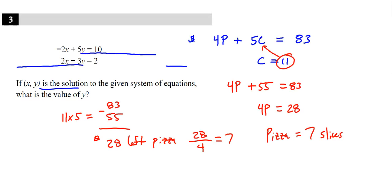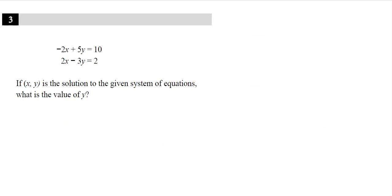Alright, number three. This one is set up classic for elimination. The big thing you're looking for is opposite coefficients. We already have it. So let's add these together. X's get eliminated. I get 2Y equals 12. So it looks like Y equals 6. That one was over before it even started.